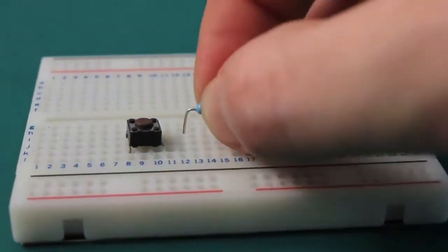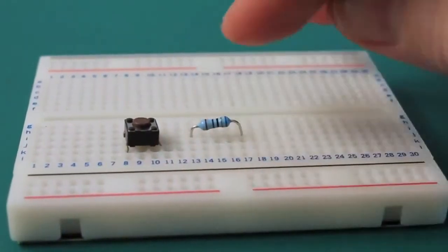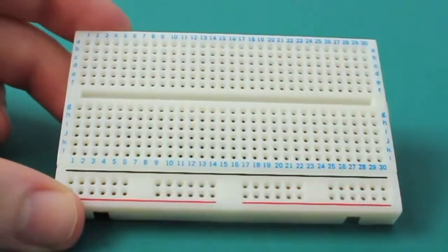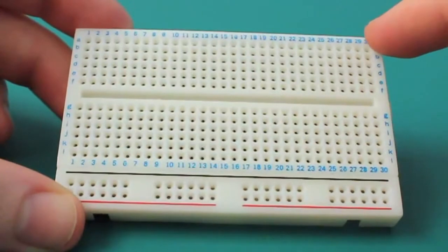First is how you make a connection. This is done by pushing the component into the holes in the board. But to make a circuit, we need to understand what happens behind the plastic exterior.